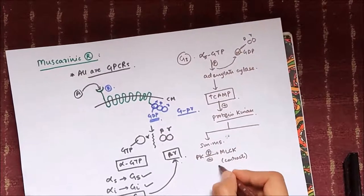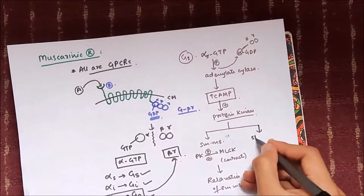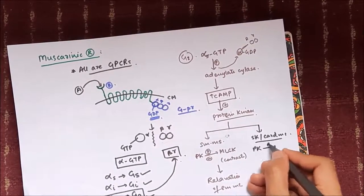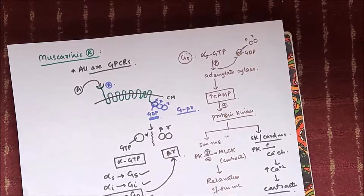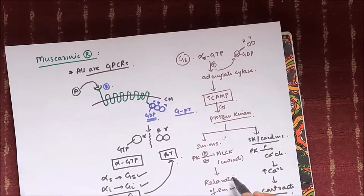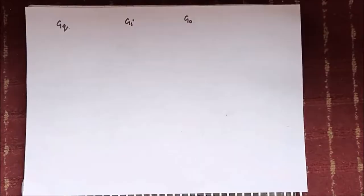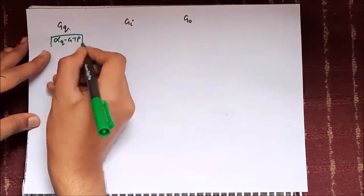The action of this protein kinase depends on the location of the receptor. In smooth muscle, it causes phosphorylation and inhibition of myosin light chain kinase, resulting in relaxation of smooth muscle. In cardiac and skeletal muscle, it phosphorylates calcium channels, increasing calcium influx and causing contraction.